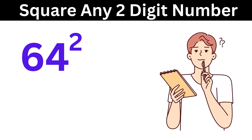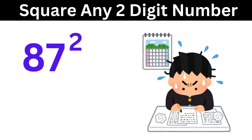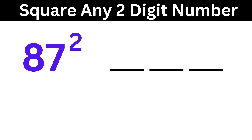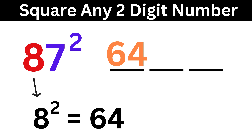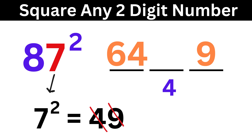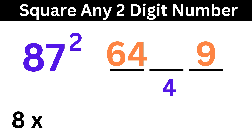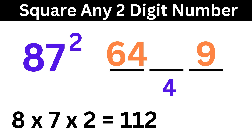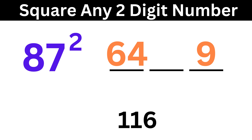Lastly, let us consider another larger example, like 87 squared. Divide into 3 parts. Now 8 squared is 64, so write it here. Then 7 squared is 49, so write 9 here and carry 4 here. Then 8 times 7 times 2 equals 112. Now add this 4 to it to make it 116.